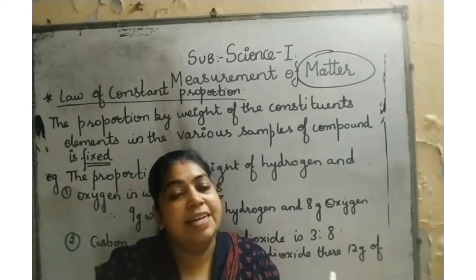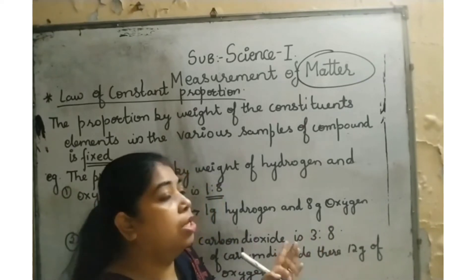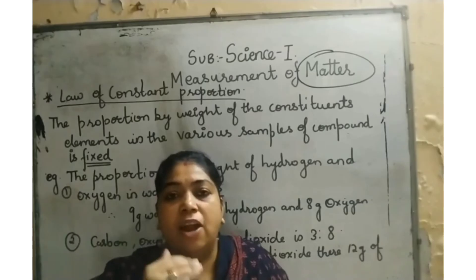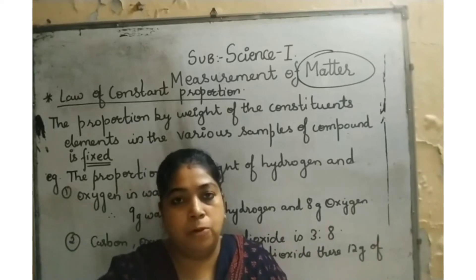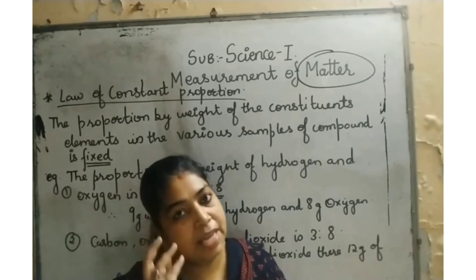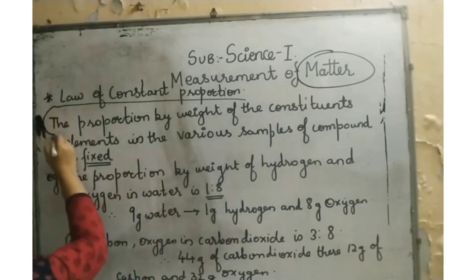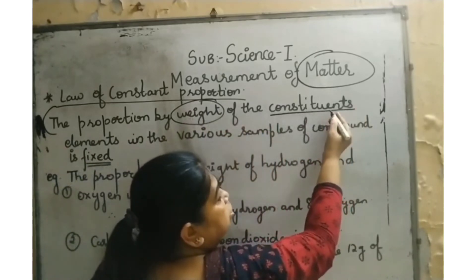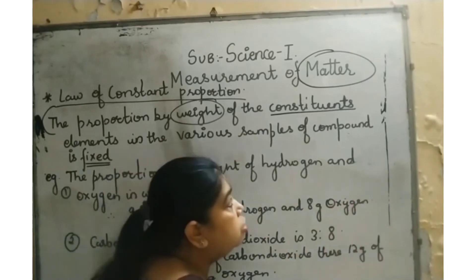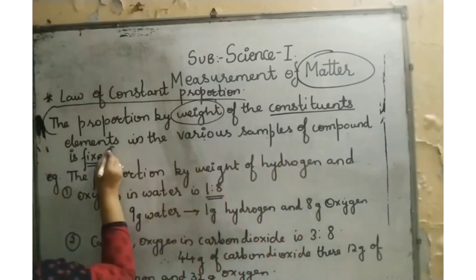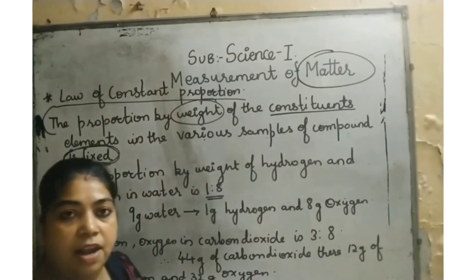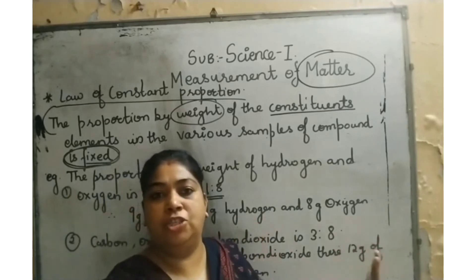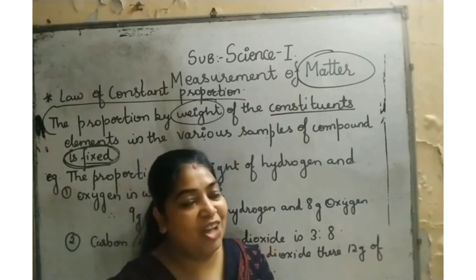The law of constant proportion states: the proportion by weight of the constituent elements in various samples of a compound is always fixed. Like a shop with a fixed rate — no change. For example, hydrogen and oxygen are the two constituents of water, and their proportion by weight is always 1:8, meaning in 9 grams of water there is always 1 gram of hydrogen and 8 grams of oxygen.